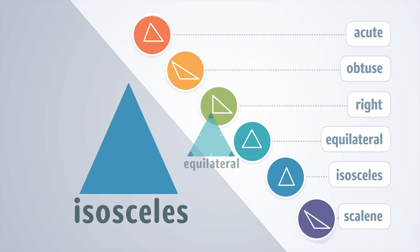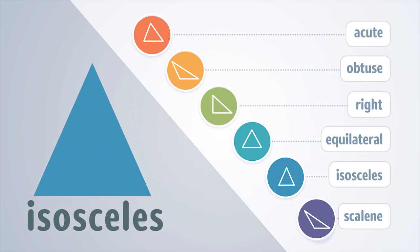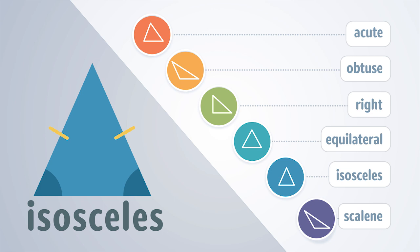An isosceles triangle has two sides of equal length and two equal angles. Unlike an equilateral triangle, only two sides of an isosceles triangle will be equal in length. The third side will have a different measurement. These two sides are equal in length and these two angles are equal in measure.